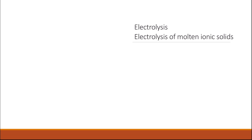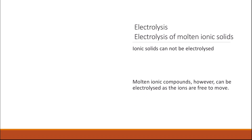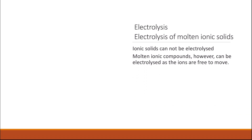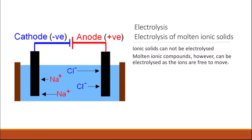There are two types of electrolysis: electrolysis of molten ionic solids, and electrolysis of aqueous solution. Ionic solids in their solid state cannot conduct electricity because the ions are tightly held together and cannot move toward the electrodes. They need to be melted first. In molten ionic compounds, the ions are free to move. An example is electrolysis of molten sodium chloride.